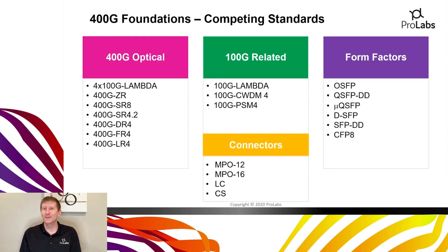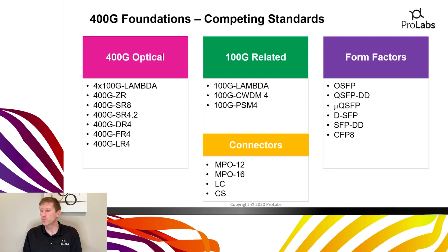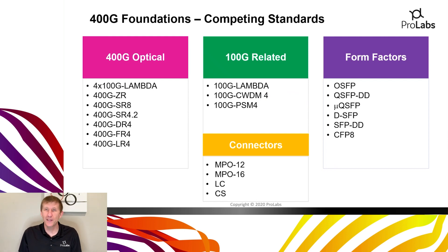To take that alphabet soup to the next level, there's a whole host of new connector types that were also being introduced with 400Gig: MPO-12, MPO-16, standard duplex LC, and a new CS connector were all introduced, really adding a lot of complexity to a 400Gig deployment.